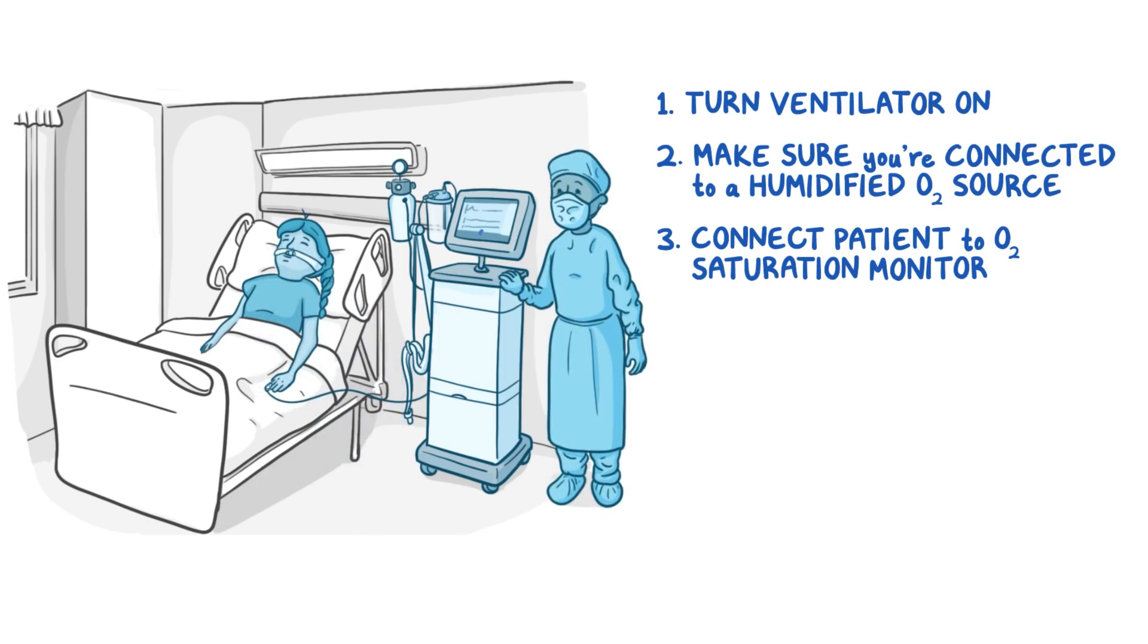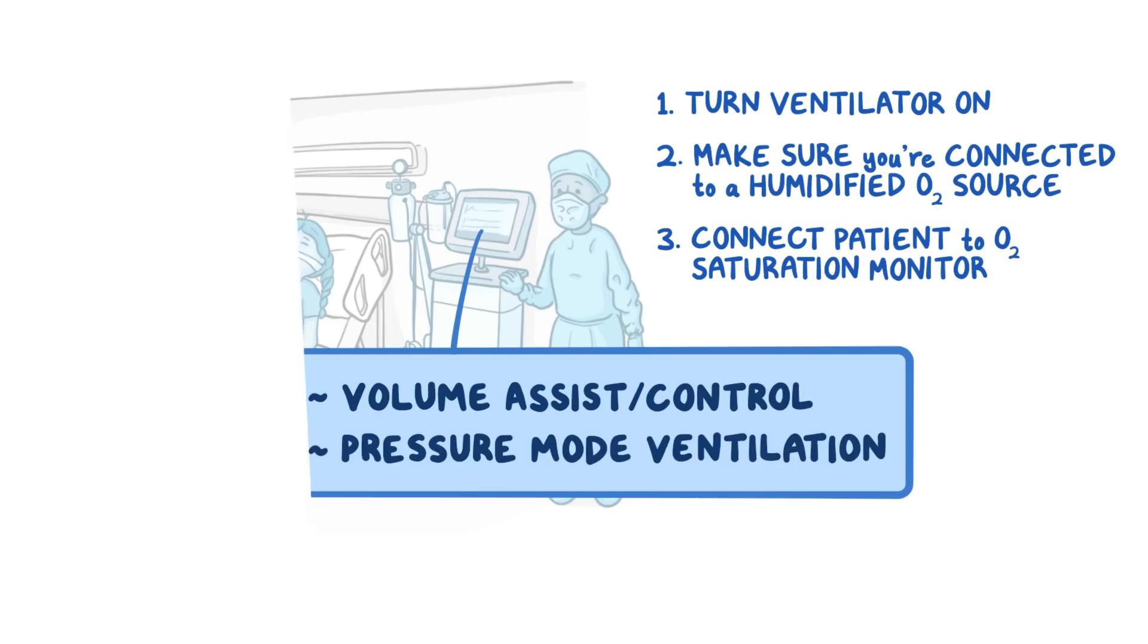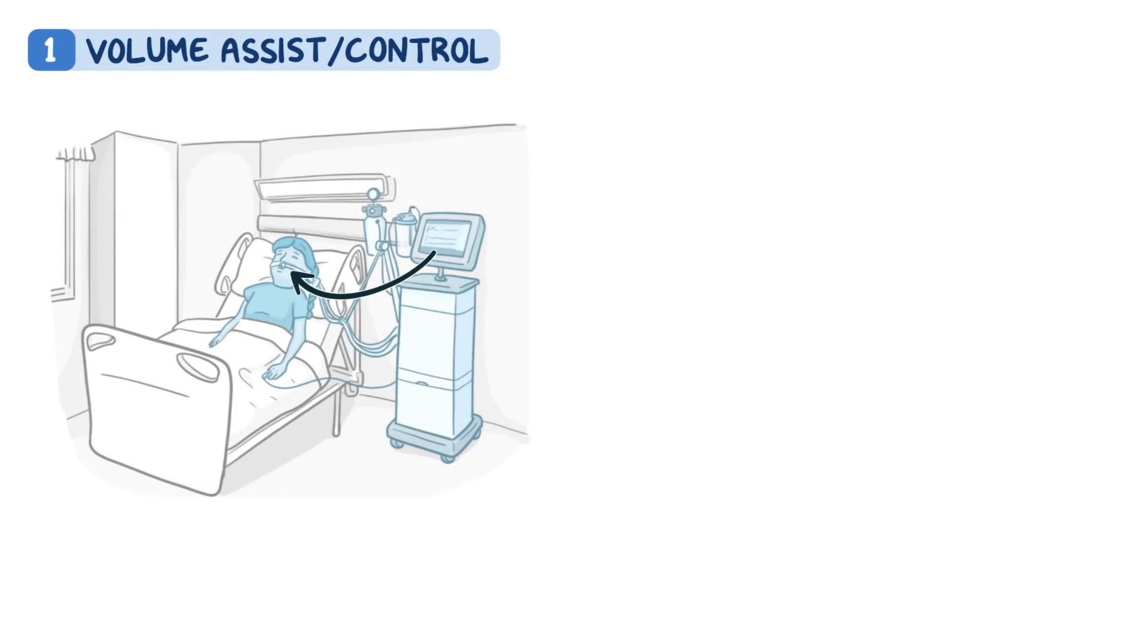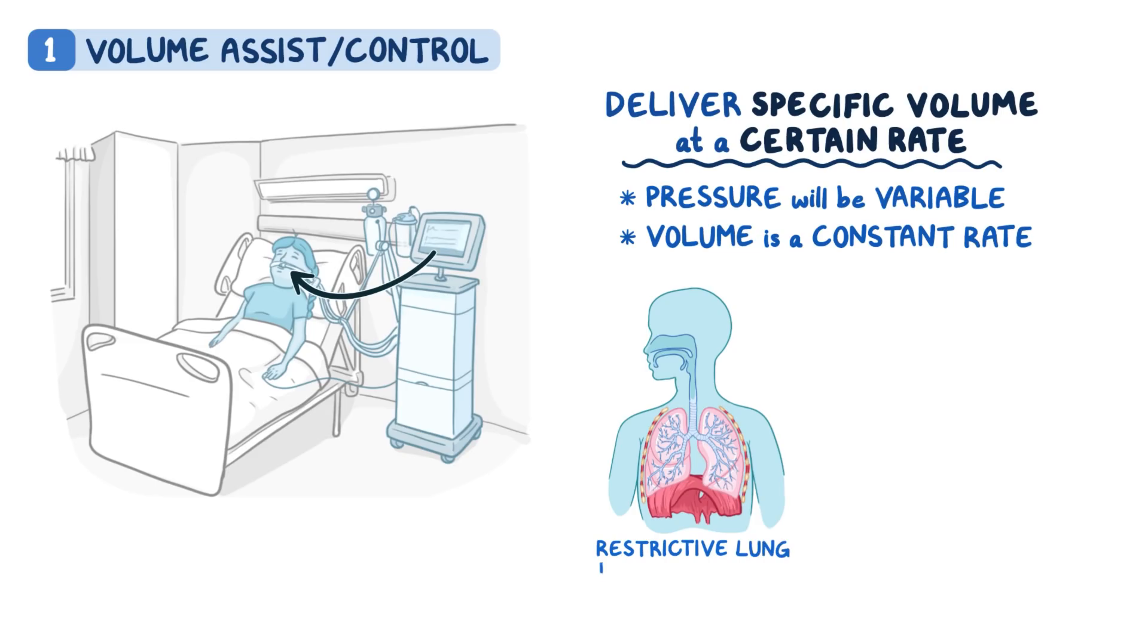There are two main ways to deliver ventilation with a ventilator: volume assist control and pressure mode ventilation. Let's start by looking at volume controlled ventilation. In volume assist control ventilation, we want to program the ventilator to deliver a specific volume of breath to the patient at a certain rate, which means the pressure will be variable and your volume will be set at a constant rate. This is important to know for patients with restrictive lung disease like acute respiratory distress syndrome, also called ARDS, where forcing a set volume of air into non-compliant lungs can cause trauma.